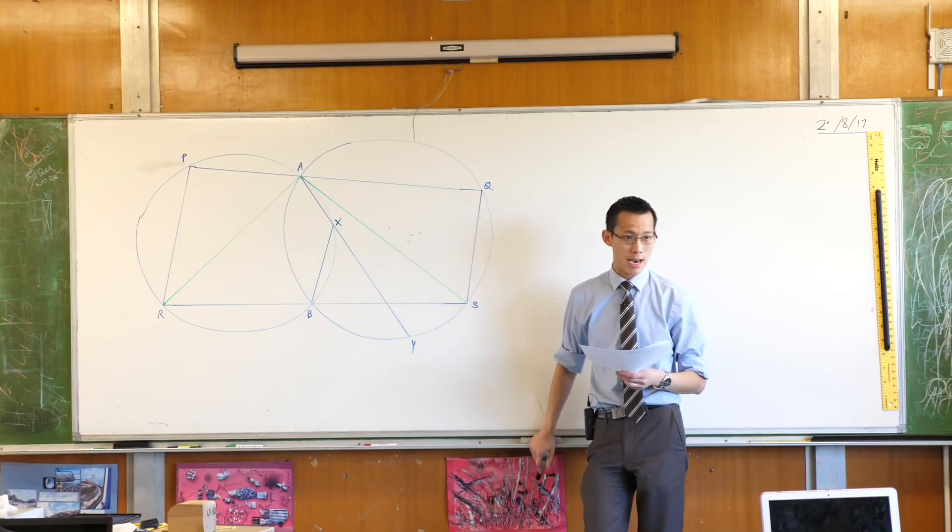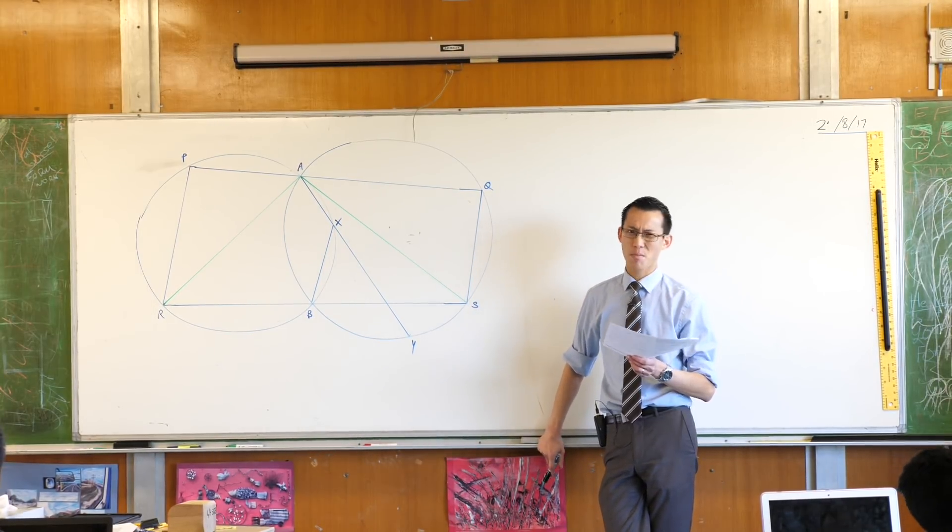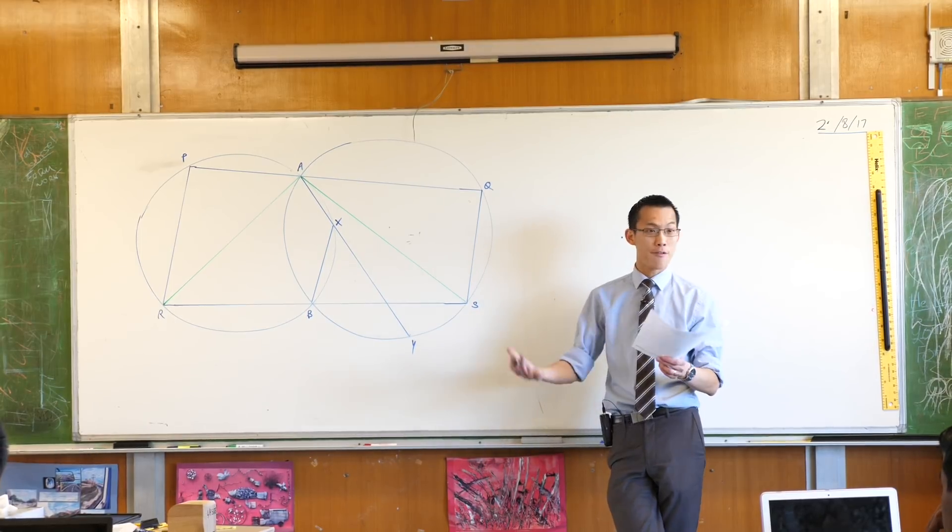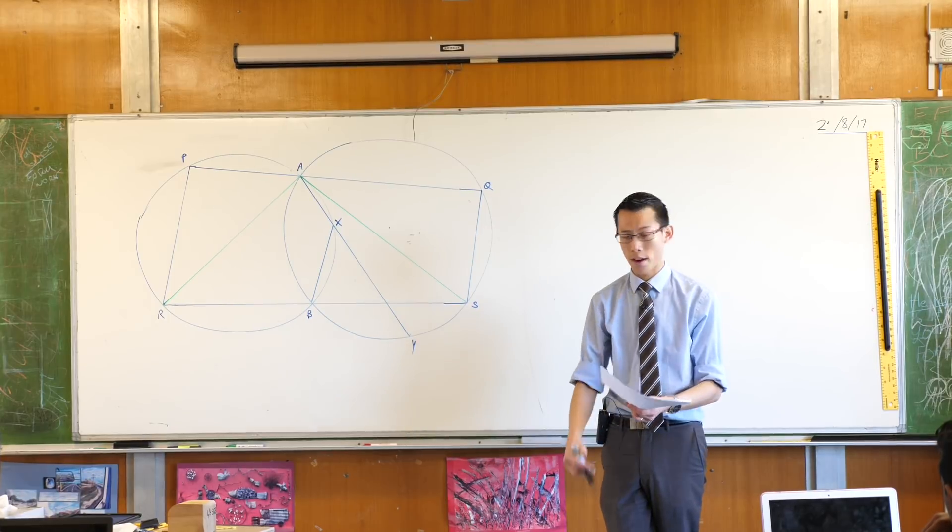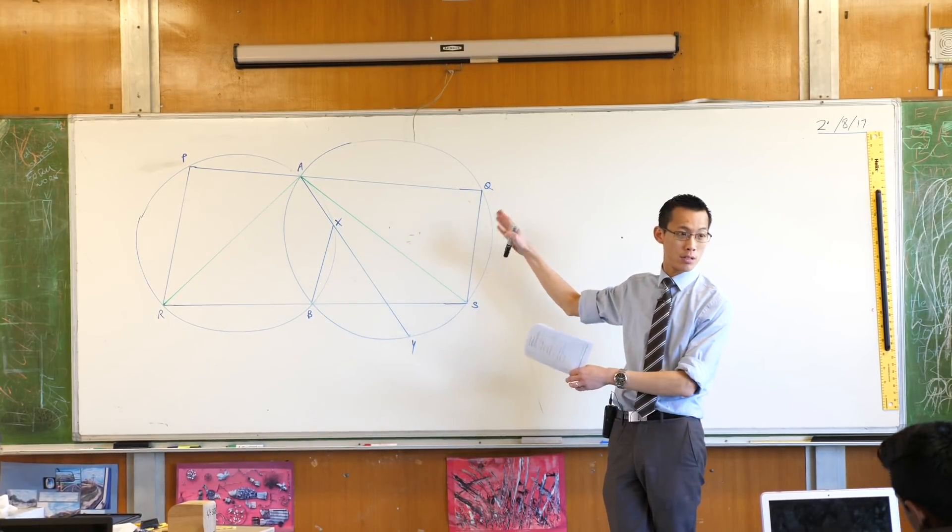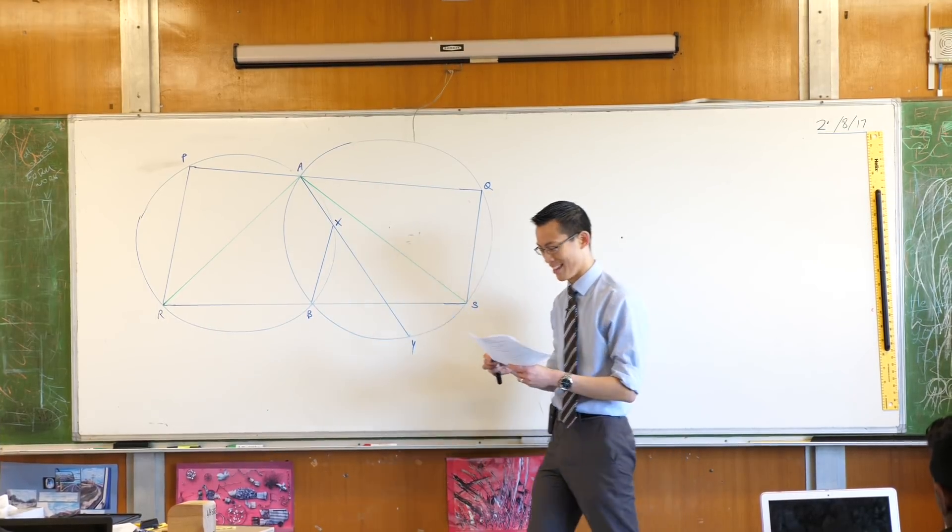AR and AS are not just any lines, they are tangents, right? That's probably going to be important. I mean they say if they are tangents, prove yadda yadda yadda. So clearly I'm going to have to refer to that. So I want to refer to these lines as different to all the others. So with that in mind, let's begin.